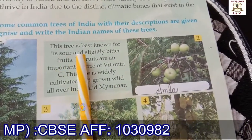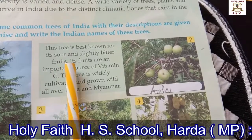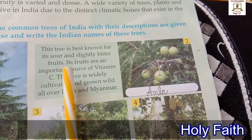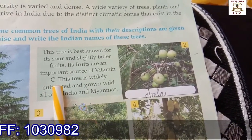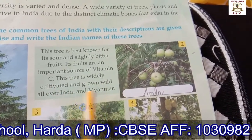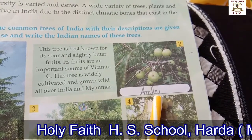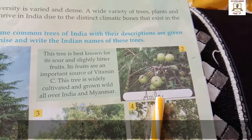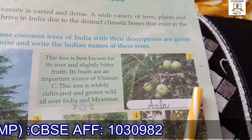Look at picture number two. This tree is best known for its sour — meaning khatta — and slightly bitter — meaning kadva — fruits. Its fruits are an important source of Vitamin C. This tree is widely cultivated and grown wild all over India and Myanmar. The name of this Indian tree is Amla. Amla is the most widely used herb in the Ayurvedic system of medicine and is also used for hair and eye care.